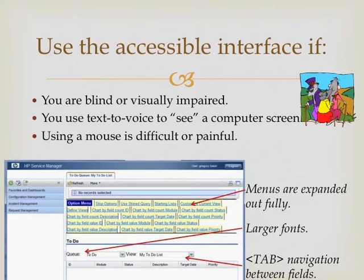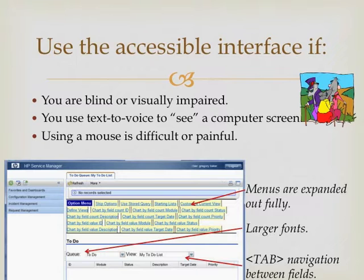Menus are expanded out fully and can be navigated through by voice control. If you're partly visually impaired then the larger fonts in the accessible interface may be helpful. Alternatively, if you find using a mouse painful or difficult, perhaps because you suffer from RSI, then you can use tab navigation between fields. All the navigation within the accessible interface can be done without use of a mouse.